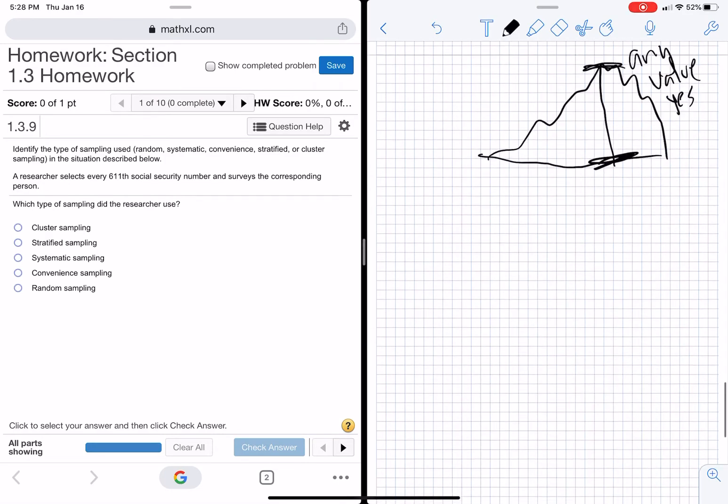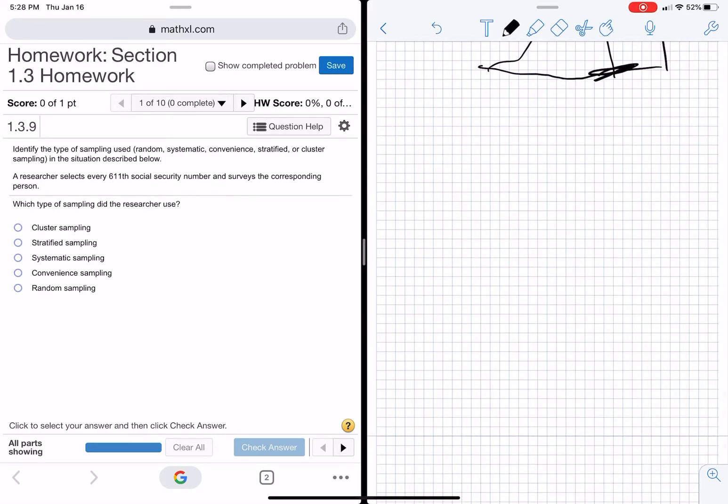Okay, so we have our sampling methods, random, and this would be a good time to show you some of the problems that I have with these. But if you sample every 611 Social Security, that's systematic, because it's every kth person.